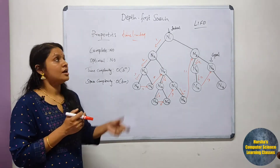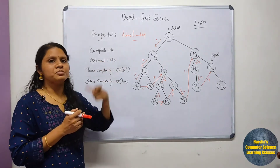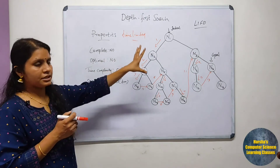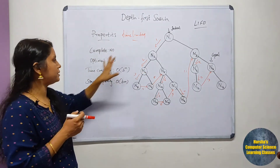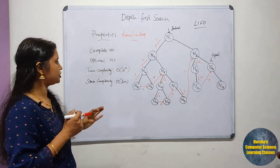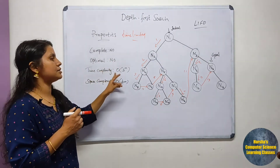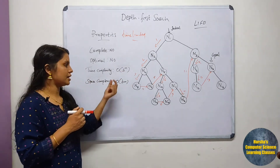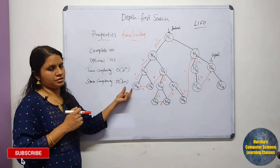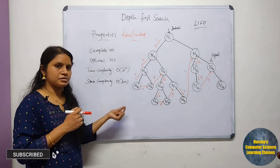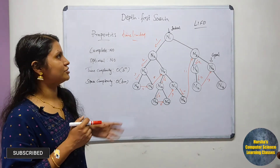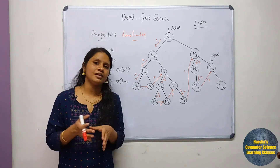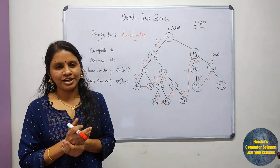The main properties of DFS: the algorithm is non-complete, we will not get an optimal solution, the time complexity is O(B^M), and the space complexity is linear represented as O(BM), where B is the branching factor and M is the depth. In the next video we will discuss Bidirectional Search, which is again one of the uninformed search techniques.